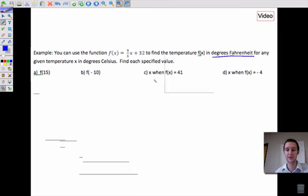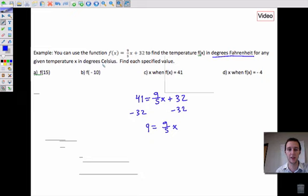This next one, then, asks for x when f(x) equals 41. So what this means is if this whole thing, this whole f(x) equals 41, now we need to find what degrees Celsius will give us a 41 Fahrenheit. Okay, so now you're just solving equations for x. We've done this in previous units, so this shouldn't be a foreign concept to us. But now we're just solving for x in degrees Celsius.